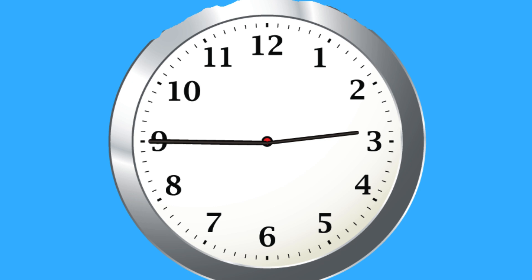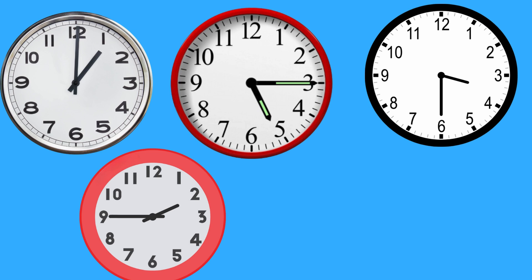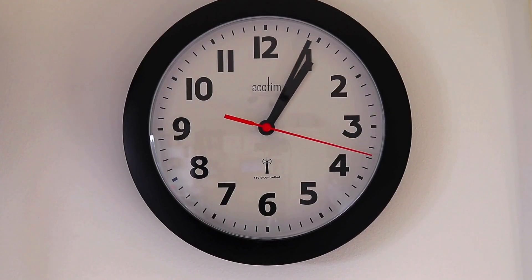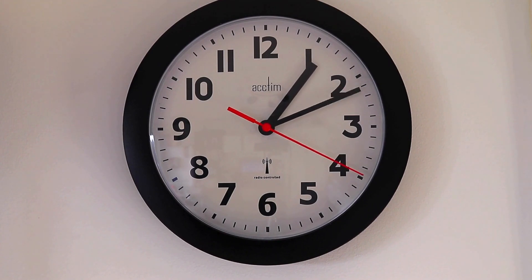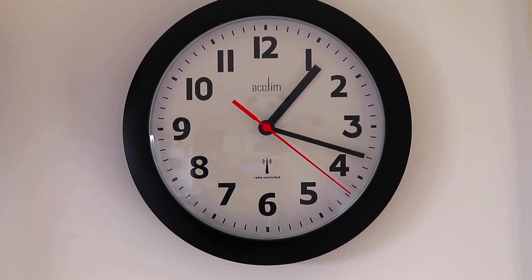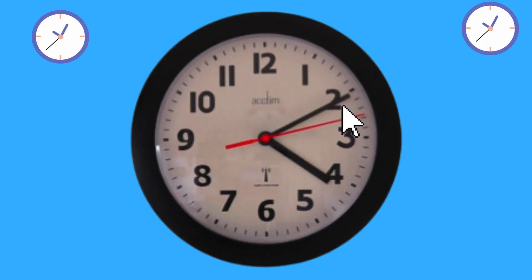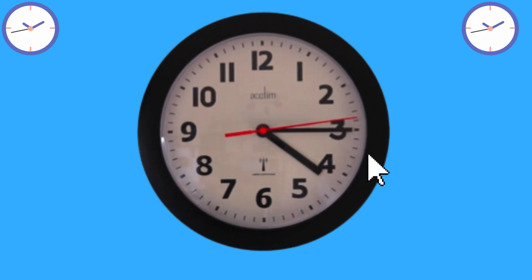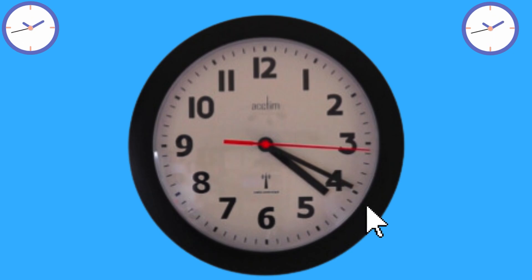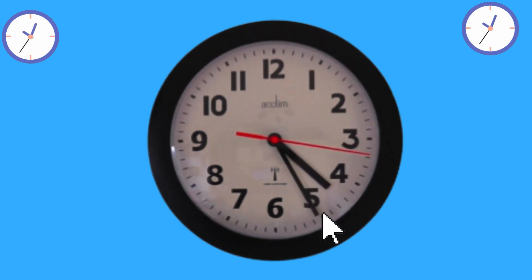Let's talk about when the long hand is pointing at numbers different from twelve, three, six and nine. We count minutes in fives. Each of these numbers is counted as five. Now let's do it: five past four, ten past four, fifteen past four, twenty past four, twenty-five past four.